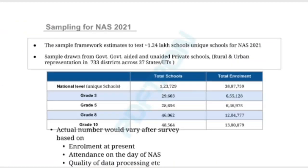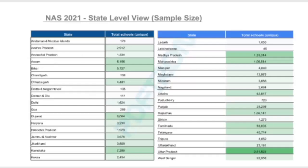Sampling for NAS 2021: The sample framework estimates to test approximately 1.24 lakh unique schools for NAS 2021. Sampled from government-aided and unaided private schools, with rural and urban representation in 733 districts across 37 states or union territories. Total number of schools and total enrollment of classes 3, 5, 8, and 10 is shown in a table. The table shows a state-level view of sample size for different states, each set having the number of schools for NAS.